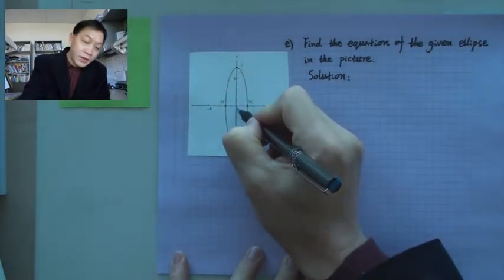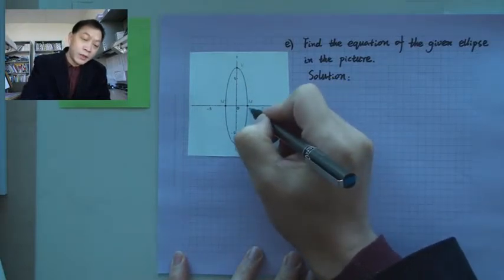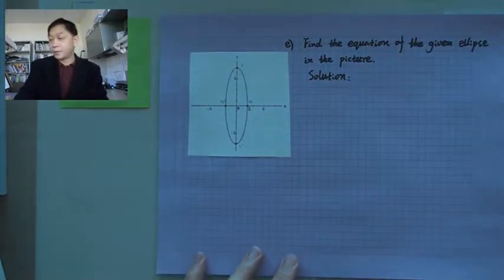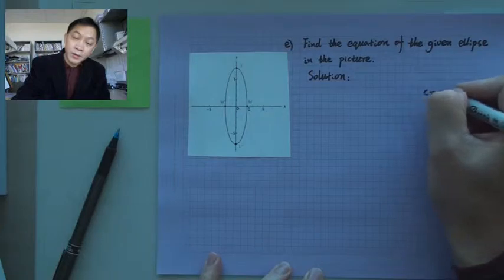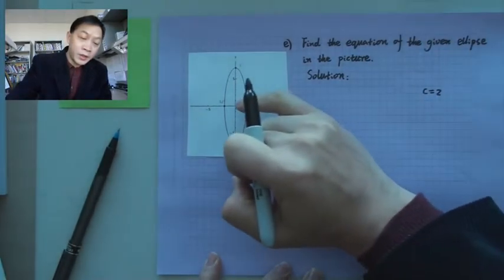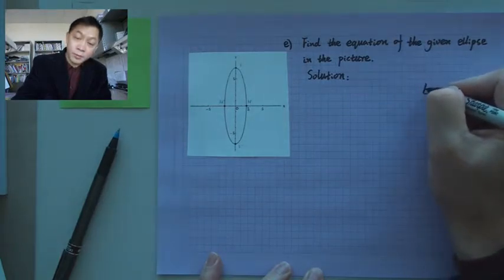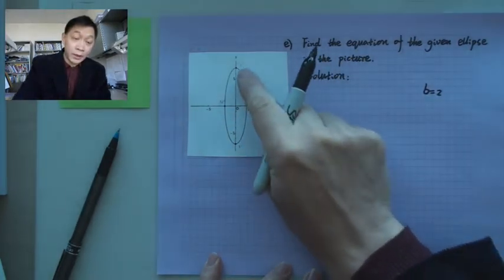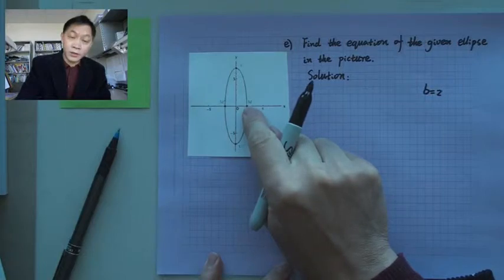From the origin — that's the center — to M prime, we know this is the minor axis. So here the value is 2, which means b is 2. The focal point c is not given here; we are given this point, which is the minor axis endpoint. So that's b.